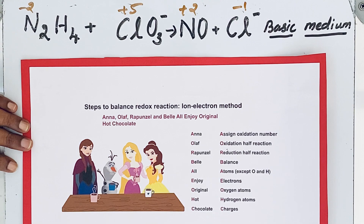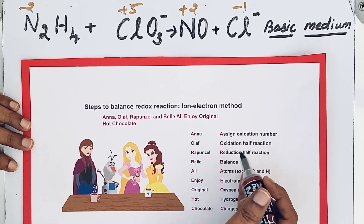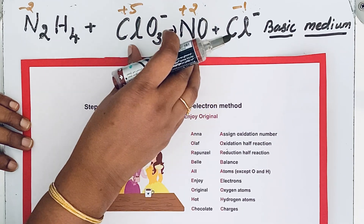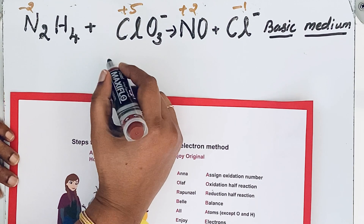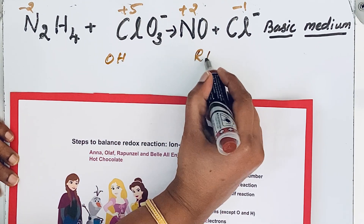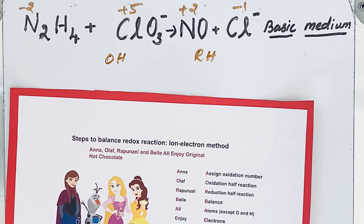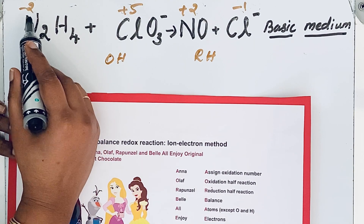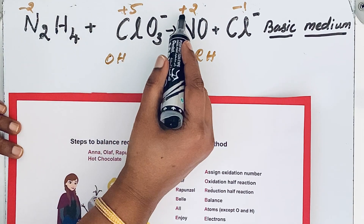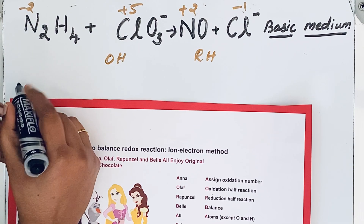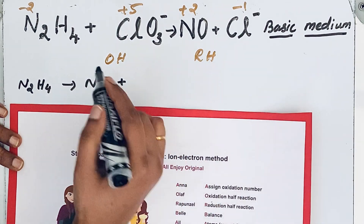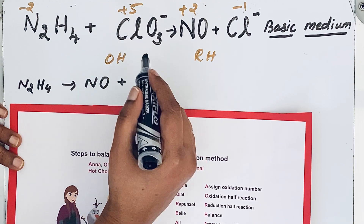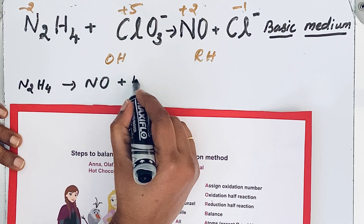Now we move to the second step: Olof — oxidation half reaction. We split the whole reaction into two half reactions. An increasing oxidation number is called the oxidation half reaction. Here, in N2H4 the oxidation number increases from minus 2 to plus 2, so this is oxidation. N2H4 is converted into NO by losing electrons, because loss of electrons is oxidation. From minus 2 to plus 2 is a change of 4, so 4 electrons are lost.